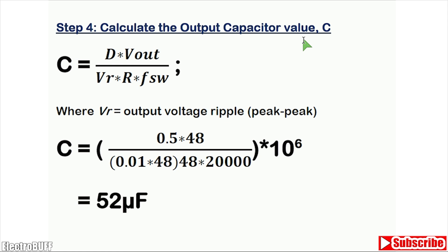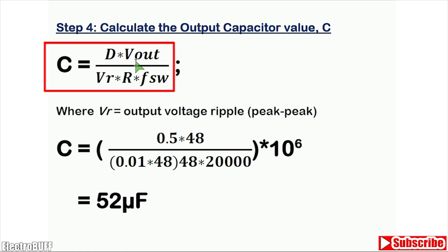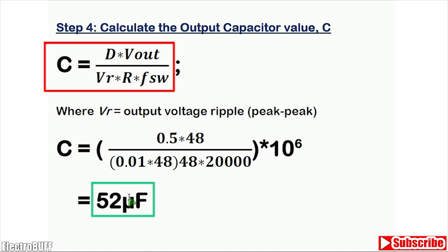Then you need to calculate the output capacitor value — the minimum capacitance required to maintain the load and desired output voltage ripple. The capacitance is given by: duty cycle × V out divided by (voltage ripple × R load × switching frequency). The output voltage ripple is the peak-to-peak change in output voltage. With D = 0.5, V out = 48V, ripple = 1%, R load = 48 ohms, and f = 20kHz, this gives 52 microfarads. Choose the next standard value of at least 56 microfarads.